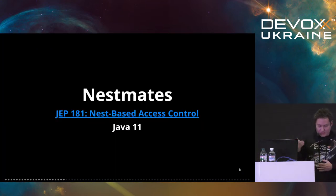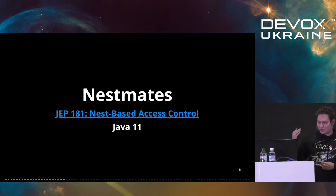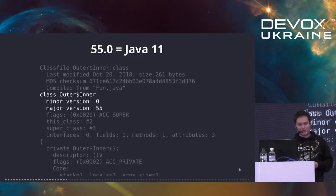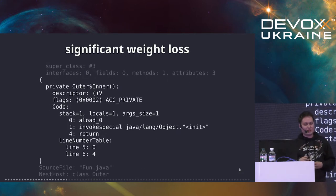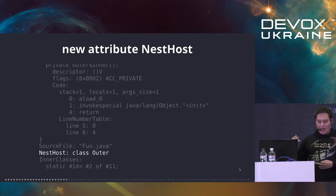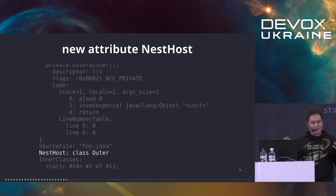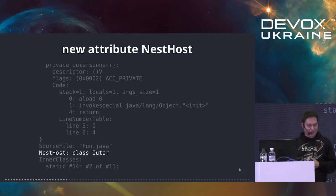Why do I say 'had'? Because things have changed. In Java 11, we got JEP 181 about nest-based access control. If you take exactly the same example but compile it for Java 11, we would notice that there is a significant weight loss — there is no more need to generate this synthetic package-local constructor. There is a new attribute which says 'I am nested in this class', so now the JVM knows these two classes are in a specific relationship, and we can relax the access rules to allow the outer class to access inner class privates.